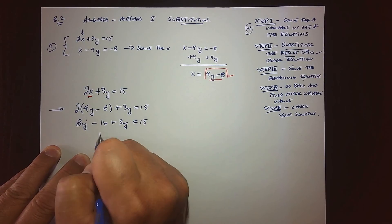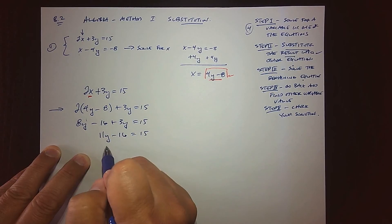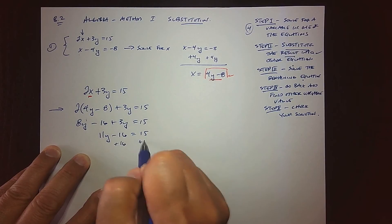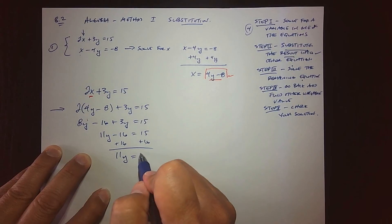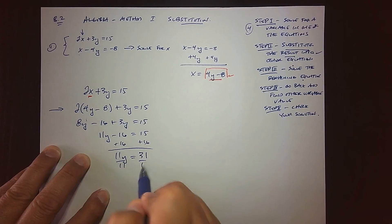8y and 3y—that's 11y minus 16. We'll add 16 to both sides next and get 11y equals 31, and then we divide both sides by 11.